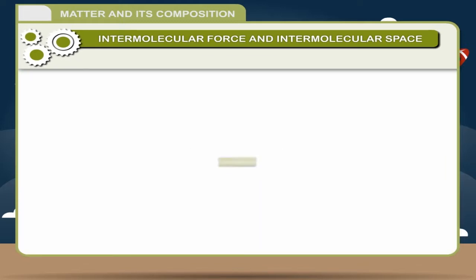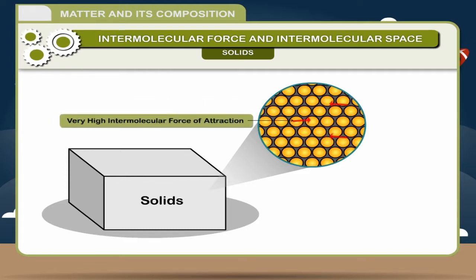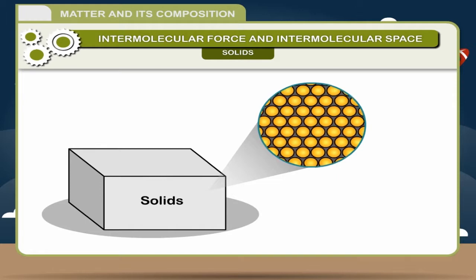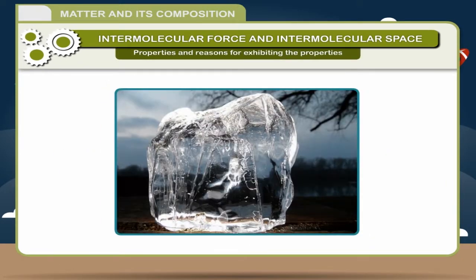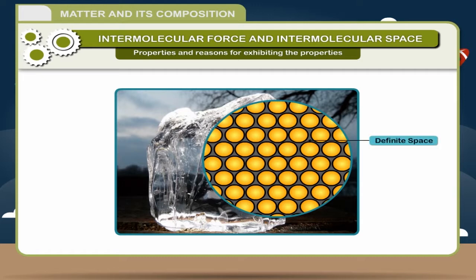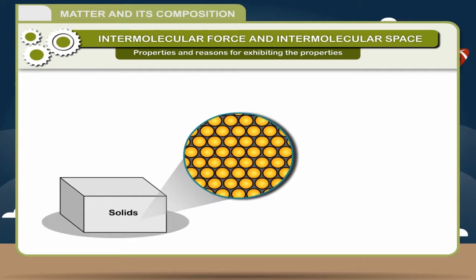Solids. Molecules are closely packed in a solid with little or no intermolecular space and very high intermolecular force of attraction. The molecules cannot move but vibrate at their place. Molecules possess less energy in a solid. Properties: Solids have a definite shape and occupy a definite space, that is, solids have a fixed volume. Reason: Since molecules are closely packed in a solid, they have the least intermolecular space and strong intermolecular force of attraction. They cannot move from their place, giving solids a definite shape and volume.